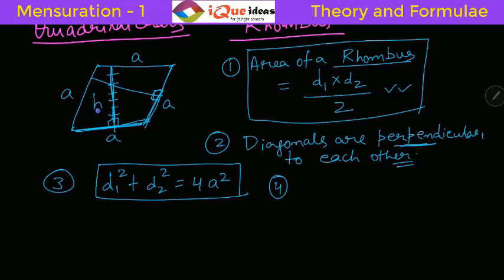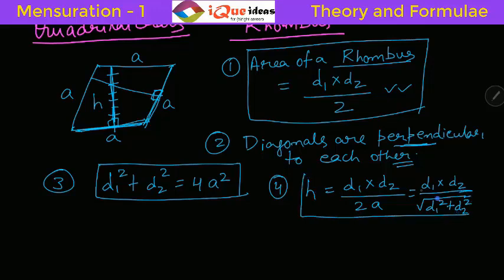Let's say this is the height h. There's a direct formula: h = (D1 × D2) / (2 × side), which can also be written as (D1 × D2) / √(D1² + D2²). This is the direct formula for height of a rhombus.